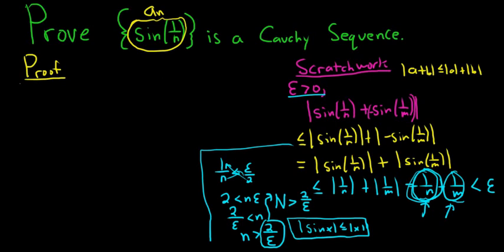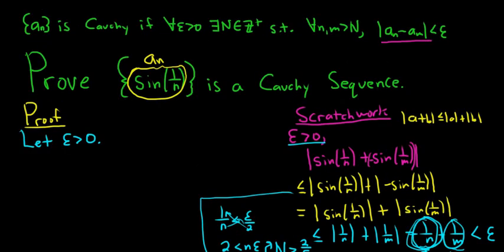Let's do the proof. We start by letting epsilon be greater than 0. Let me scroll up so you can see the definition of Cauchy again. You start with this, and now you have to find a positive integer N. We did all that hard work to find it. So we'll choose a natural number N via the Archimedean property greater than 2 over epsilon.